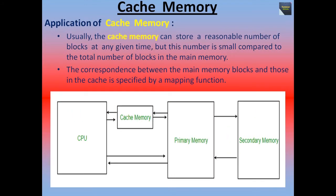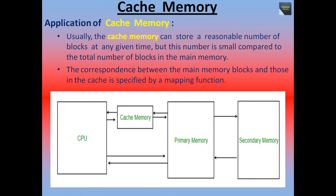Now we talk about the application of cache memory. Usually cache memory can store a reasonable number of blocks at any given time, but this number is small compared to the total number of blocks in main memory. The correspondence between the main memory blocks and those in the cache is specified by a mapping function. The cache memory resides between the CPU and the primary memory.